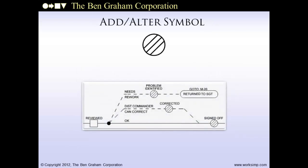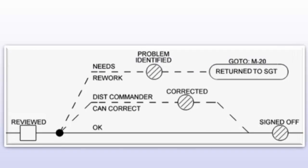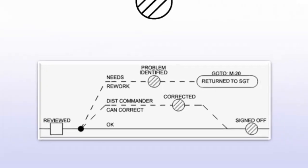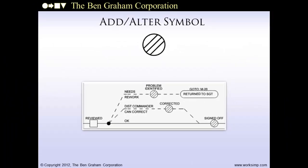The add-alter symbol is shown as a circle with lines across it. It represents any time information is added to or changed on a document — the value-added steps for an information process. It may be a date stamp, initials, a signature, or even deletion or erasure of a previous entry. In this snippet, you see add-alter symbols representing identifying a problem on a document, correcting a problem, and signing off. The text may include a list of specific entries such as customer name, address, and telephone number.